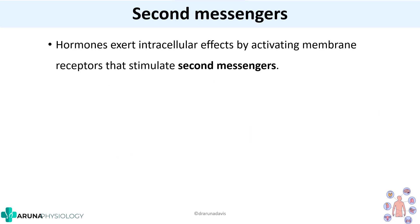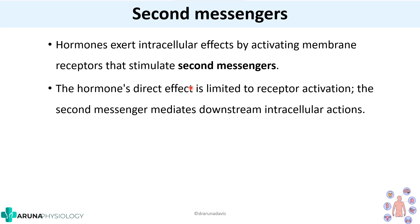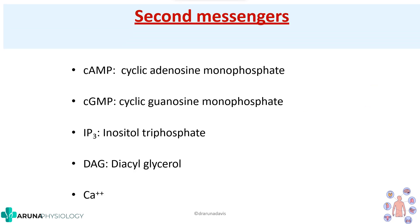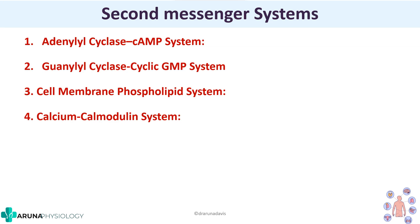Second messengers are basically molecules through which hormones exert their intracellular effects. The hormone's direct effect is limited to receptor activation, and second messengers mediate the downstream intracellular actions. The different second messengers include cAMP (cyclic adenosine monophosphate), cGMP (cyclic guanosine monophosphate), IP3 (inositol triphosphate), DAG (diacylglycerol), and calcium. Through these second messengers, G-protein coupled receptors act via systems such as the adenylyl cyclase/cAMP system, guanylyl cyclase/cGMP system, cell membrane phospholipid system, and calcium-calmodulin system.